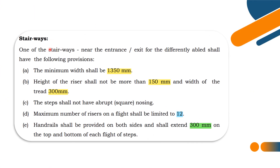Stairways provisions are also important. Height of riser: 150 mm; width of tread: 300 mm. Maximum number of risers is 12 per flight. Handrails shall be provided on both sides and shall extend 300 mm at the top and bottom. These provisions are important for stairways, along with the corridor and veranda table values.